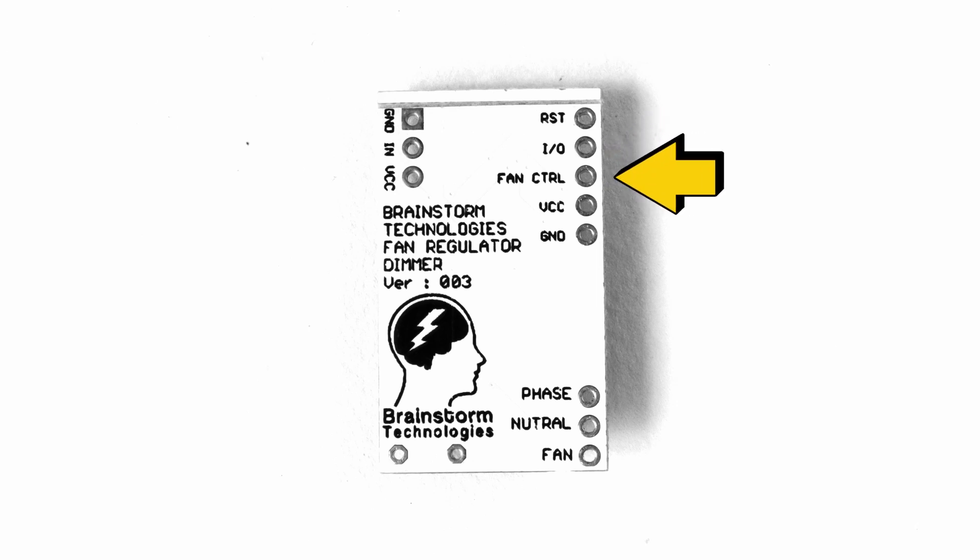The third pin is very important and it is the fan control pin. On this pin you can give a variable voltage to control the fan speed or dim the light. This same pin is connected with the potentiometer port. You will be able to use either potentiometer or microcontroller to control the fan speed or light dimming.